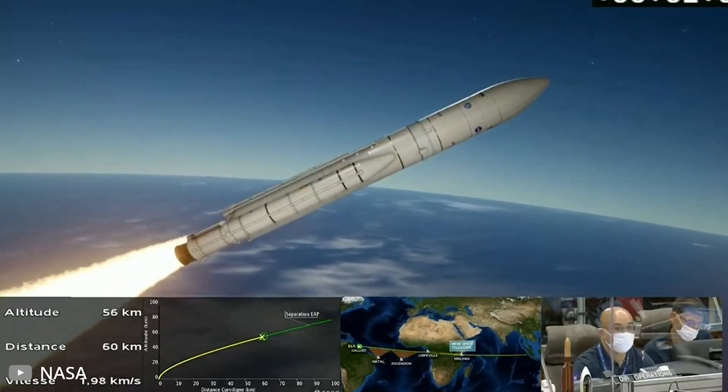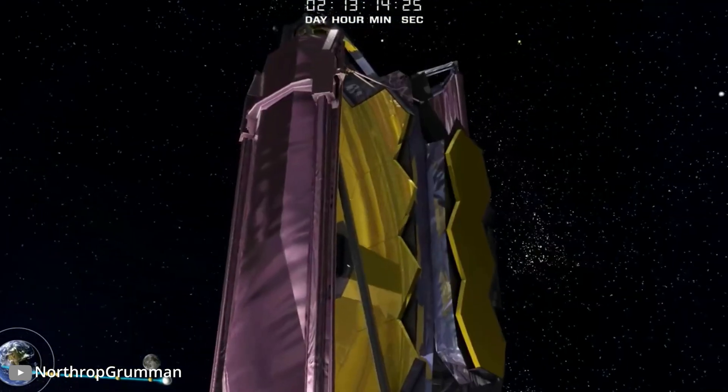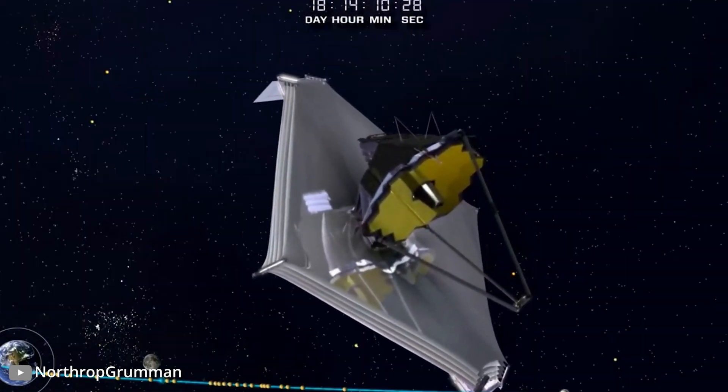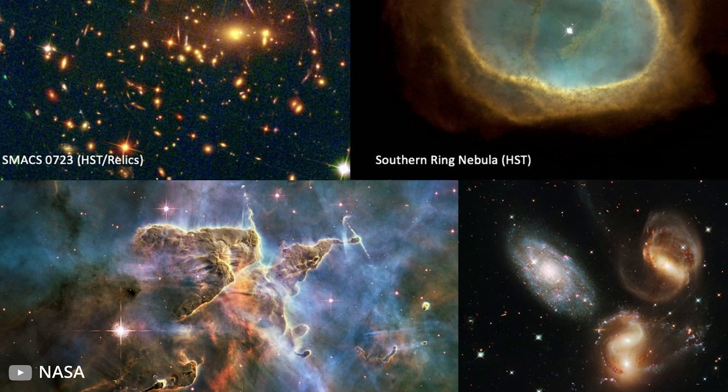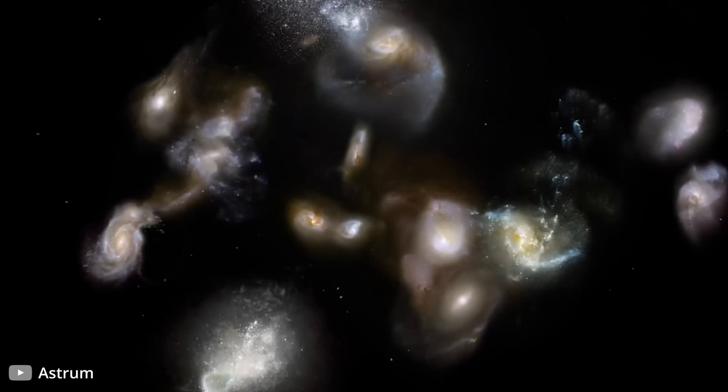When the JWST was launched into orbit on the 25th of December 2021, shooting past Santa Claus as it began its 1.5 million kilometer journey into outer space, few would have thought that it would return with images that would smash through what we had conceived about the creation of the universe.